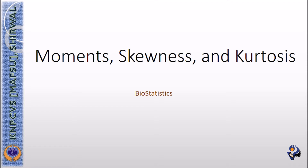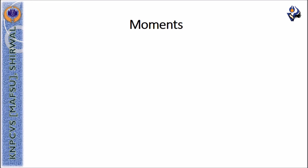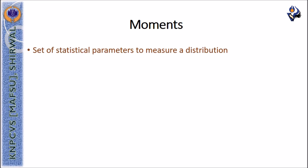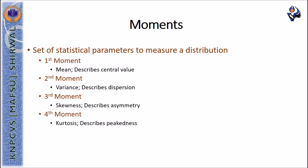Hello and welcome to the class on moments, skewness and kurtosis. The characteristics of a given distribution cannot only be described with measures of central tendency or measures of dispersion, but also with moments, skewness and kurtosis. Moments are a set of statistical parameters used to measure a distribution. The first moment is the mean, the second is the variance, the third is skewness describing asymmetry, and the fourth is kurtosis describing the peakedness of the distribution.